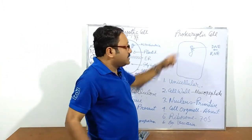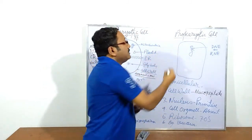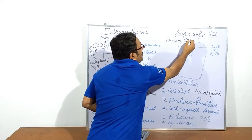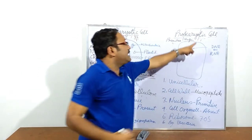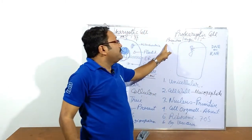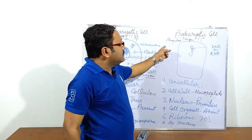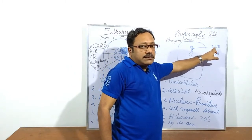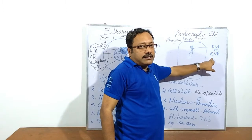Now take a look at prokaryotic cells. The cell relating to a primitive nucleus is called the prokaryotic cell. 'Pro' means primitive and 'karyon' means nucleus. In prokaryotic cells, only a naked piece of DNA or RNA is present — either DNA or RNA, as RNA is ribonucleic acid. These cells are unicellular; all bacteria are grouped under prokaryotic cells.